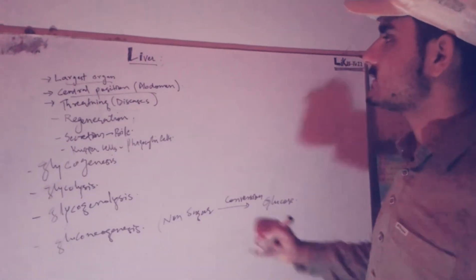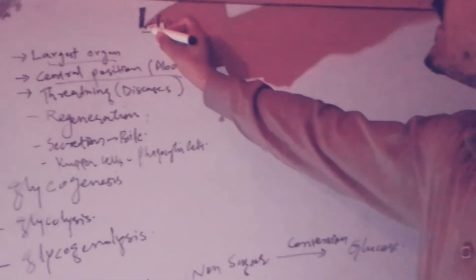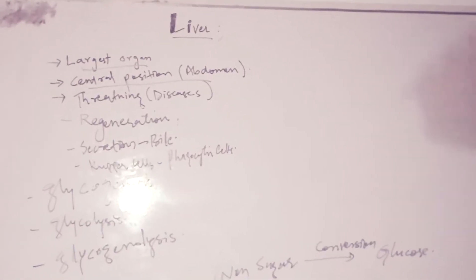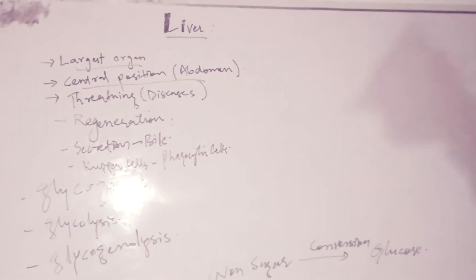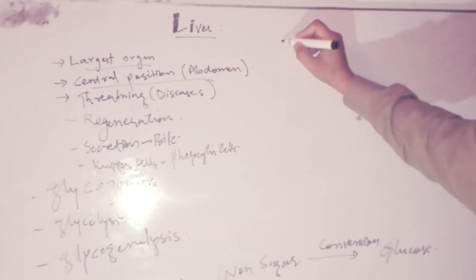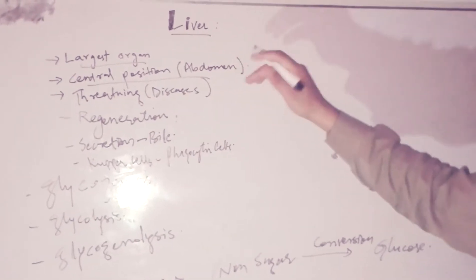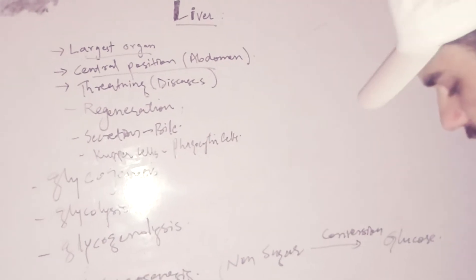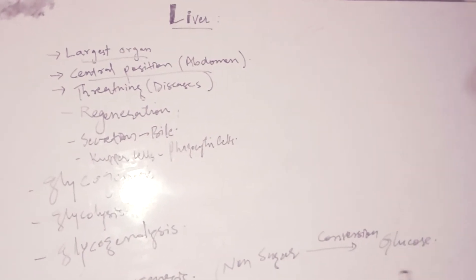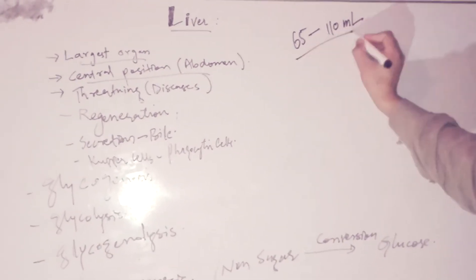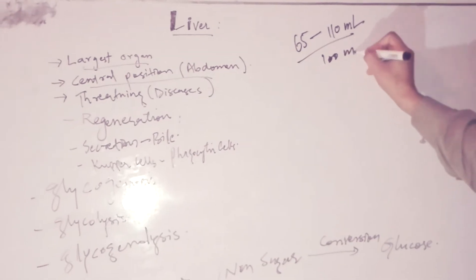Today our topic is liver. Liver is considered the largest organ in the body and physiologically it has great importance because it maintains blood glucose level. We know that the normal glucose level in the blood maintained by the liver is 65 to 110 mg per 100 ml of blood.